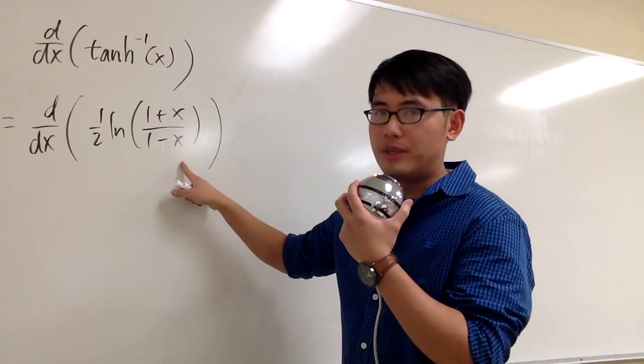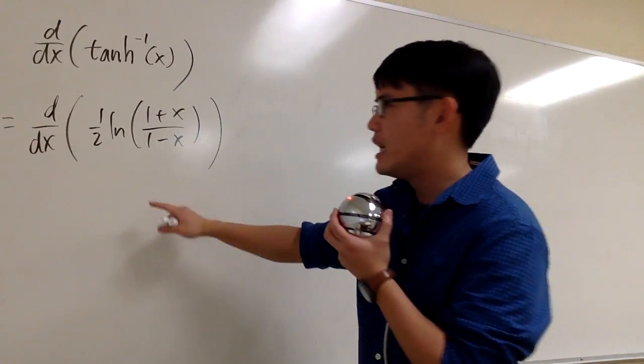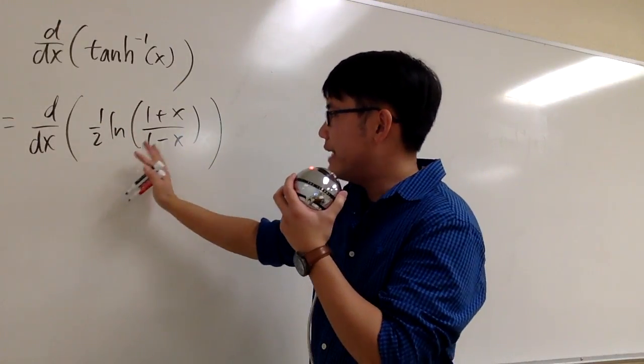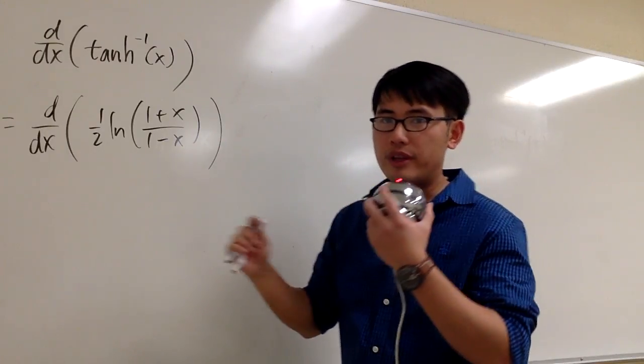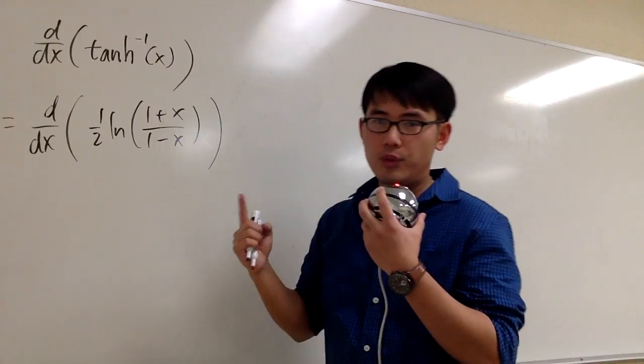This is something that we know how to handle much better because we did that in Calc 1. But before you do, go ahead and do derivative. Notice that this is ln of a quotient. We can break them apart by the ln property. We will do that first.